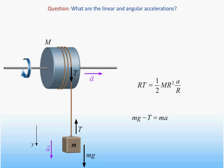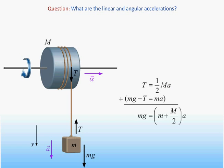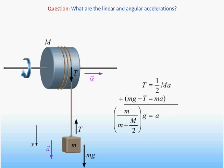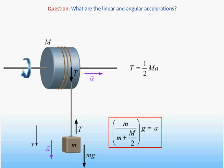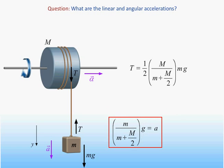We can now eliminate the moment of inertia from the rotational equation by substituting in its value in terms of the mass and radius of the disk. Adding these two equations, we find that the linear acceleration is less than g by a factor determined by the masses of the weight and the disk. Substituting this value back into the rotational equation, we find that the tension is less than the weight by another factor determined by the masses of the weight and the disk.